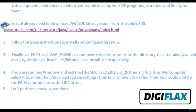First of all, you need to download the Java SDK latest version from the given URL. Follow the instructions to install and configure the setup. Finally, set the PATH and JAVA_HOME environment variables to refer to the directory that contains Java and JavaC — typically JAVA_INSTALL_DIR/bin and JAVA_INSTALL_DIR respectively. JAVA_INSTALL_DIR is the directory where we have installed the Java software.